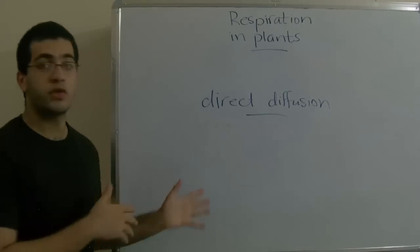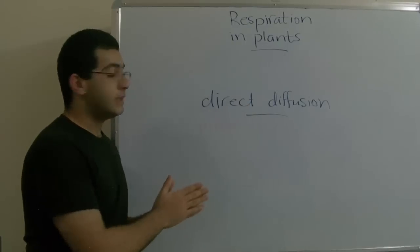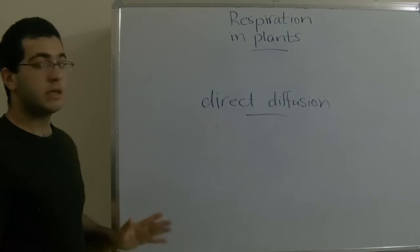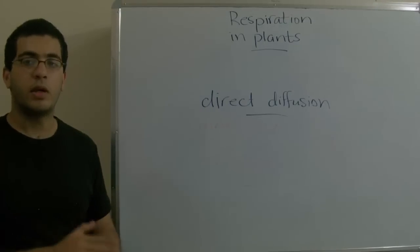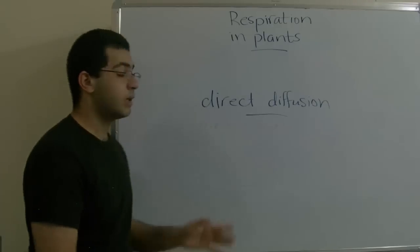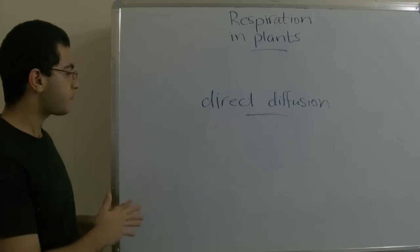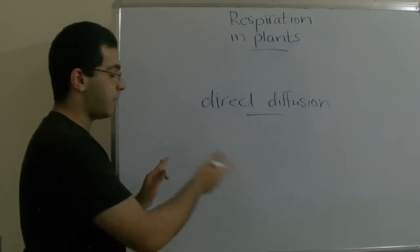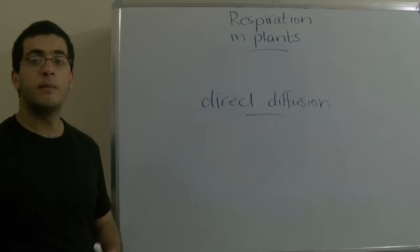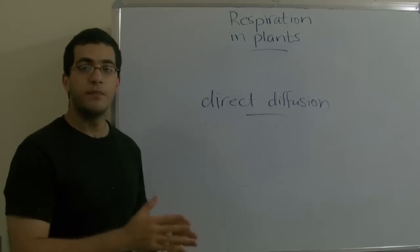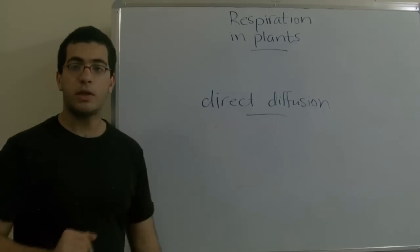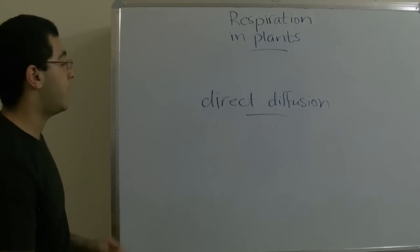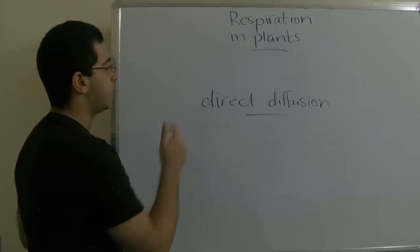Instead of entering through the stomata, the carbon dioxide diffuses directly from the stomata or from the cells which are in direct contact with the external environment into the outside environment. And inside the deeply situated cells, for example in the center of the plant, the carbon dioxide diffuses through the intercellular spaces of the cells until it reaches the stomata and gets outside the plant through direct diffusion.